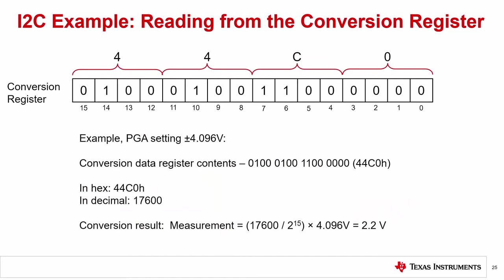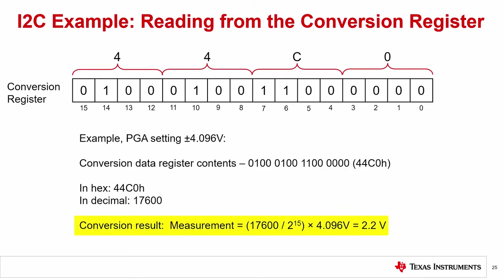Just to follow up with the conversion register result, let's use one last example with reading data and making the conversion. Let's say you read out the data from the conversion register, and it reads 0x44C0 in hexadecimal or 17,600 in decimal. This is the ADC output based on the input voltage from the measurement. Using this value, you can convert the conversion register to a voltage for the ADC measurement. With a positive full-scale range of 4.096 volts, you can convert this to a measured voltage. Here, the ADC is reporting 2.2 volts.